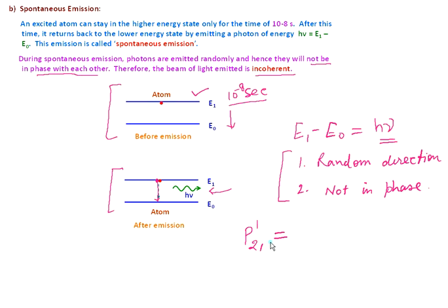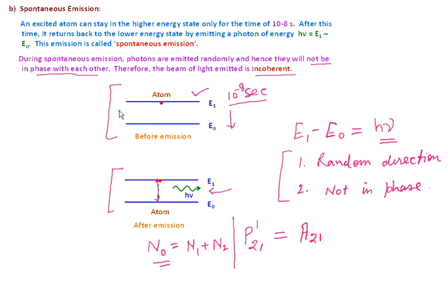To find the transition probability for spontaneous emission when considering a large number of atoms, it is defined as P21 prime. The transition probability is defined by taking a large number of atoms where N-naught is total atoms, N1 is the number in the ground state, and N2 is the number in the excited state. The transition probability in case of spontaneous emission is defined only through the Einstein coefficient A21 — there is no role of external source energy.